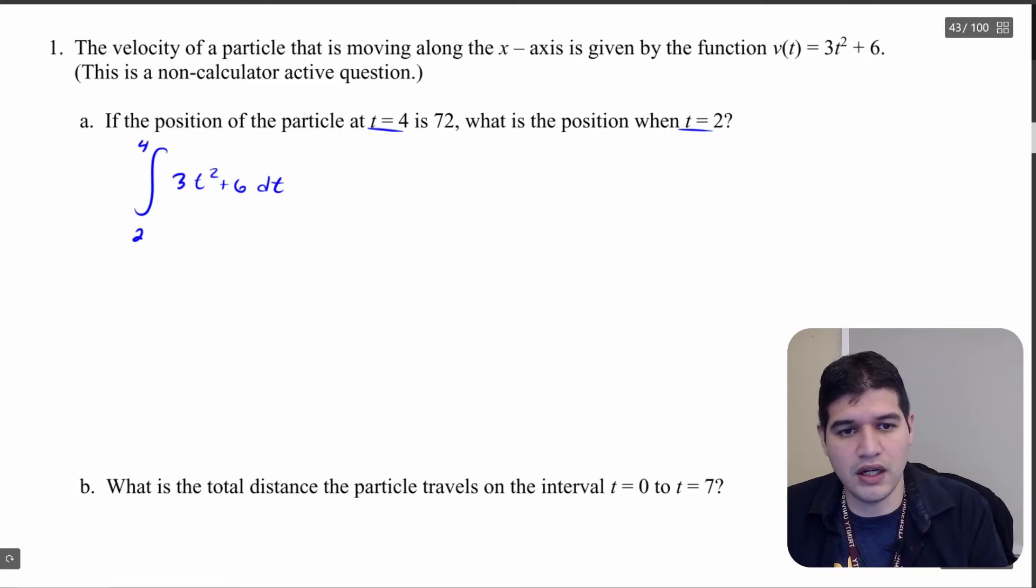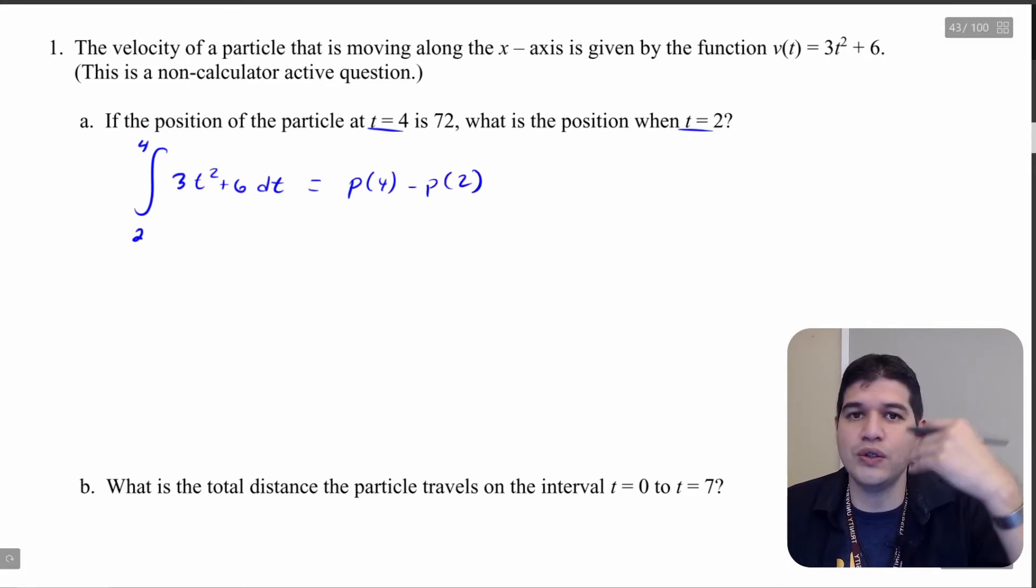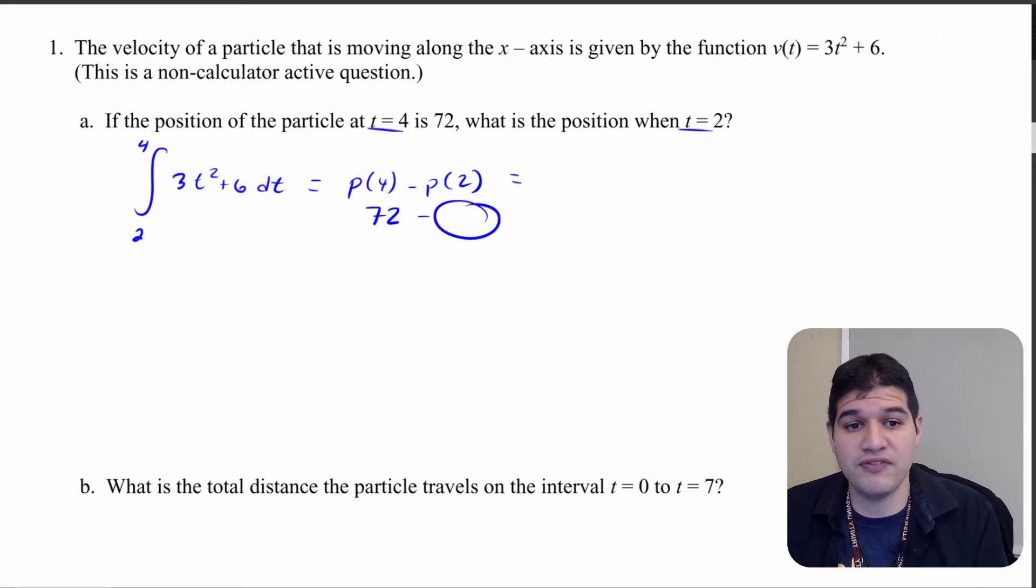That's going to be my variable of integration there, and so I know when I actually evaluate this that this is going to be position at 4 minus the position at 2. So we know that the position at 4 is 72, we can figure out what p of 2 is. But first we're going to need to actually calculate this integral.